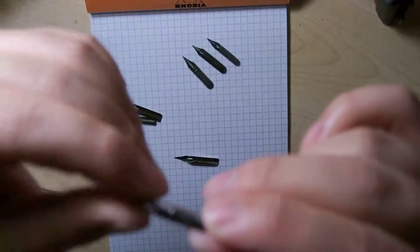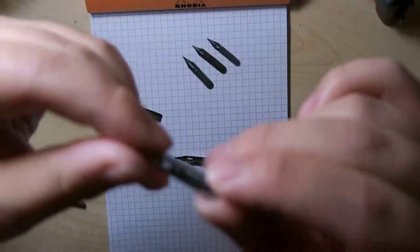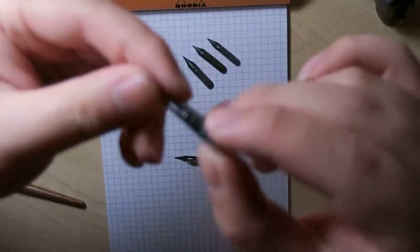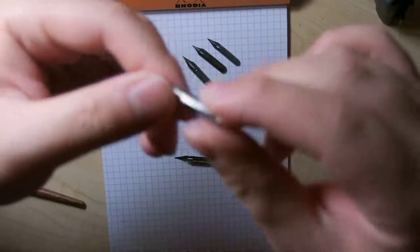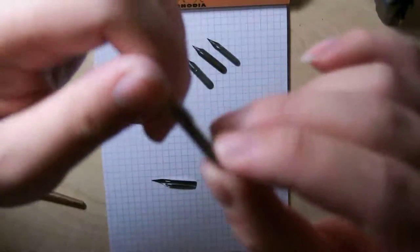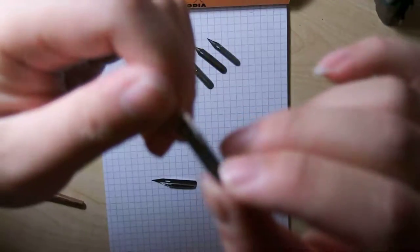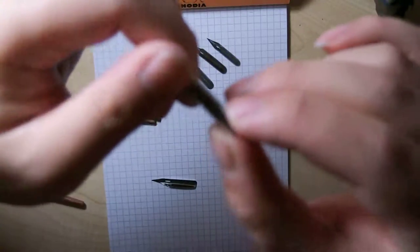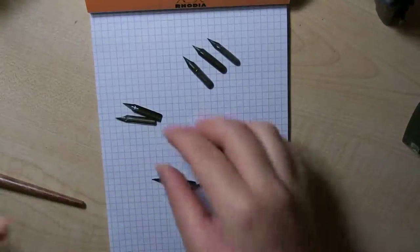This here is a Japanese nib, Nikko G nib, very nice, very smooth, very shiny as you would expect from the Japanese. Here's another one, another G nib from Japan called the Zebra nib.